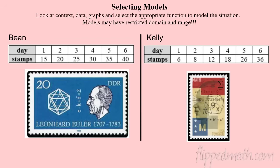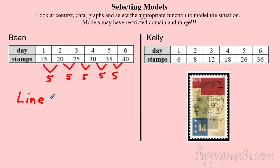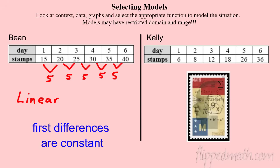We're starting with the Algebros and their stamp collections — math stamps, of course. Looking at Mr. Bean's total stamps over a number of days, we check the rate of change: from 15 to 20 is 5, and every difference is also 5. Since the first differences are constant, this is linear — Mr. Bean is getting 5 stamps per day.